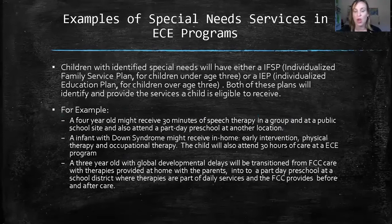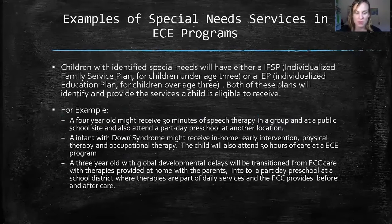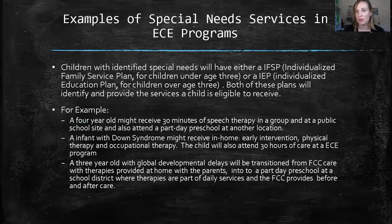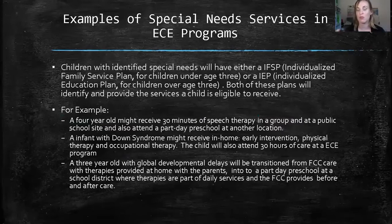An infant with Down syndrome might receive in-home early intervention, physical therapy, and occupational therapy, while also attending 30 hours of care at an early childhood education program. A three-year-old with global developmental delays will be transitioned from family child care with home-based therapies into a part-day preschool at a school district where therapies are part of daily services, and the family child care provides before and after care. The IEP and IFSP, things provided under the IDEA Act, can also be part of the work that we do with children, since most of us are supporting working families.